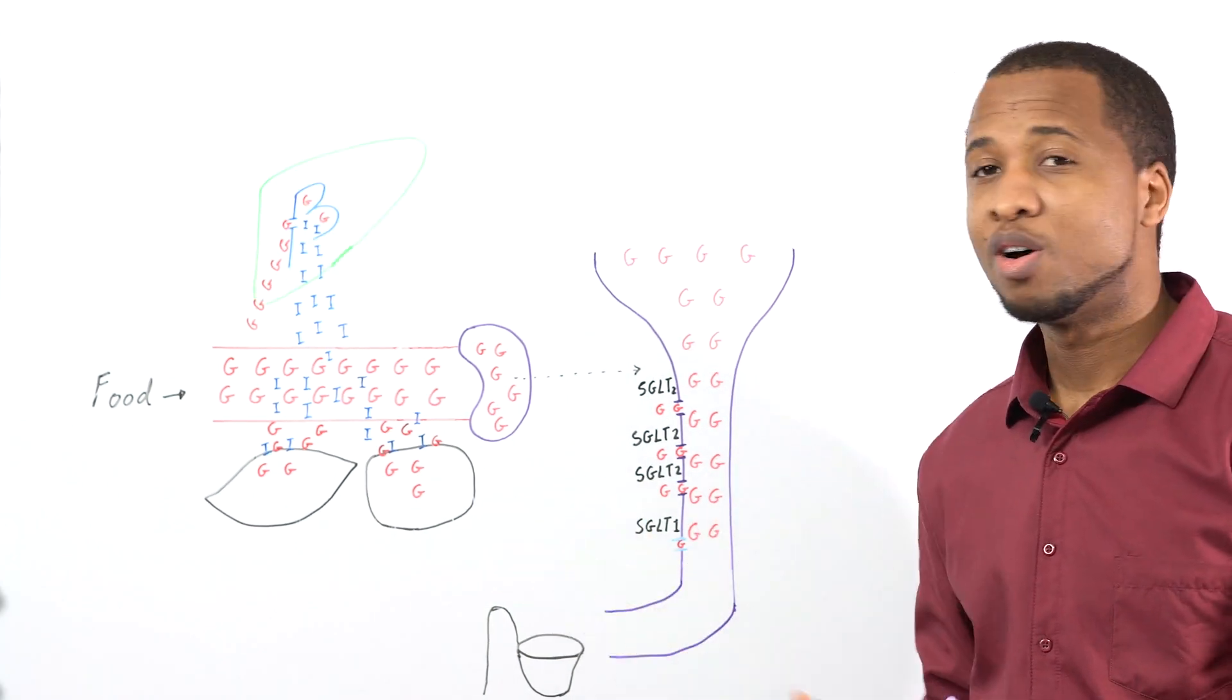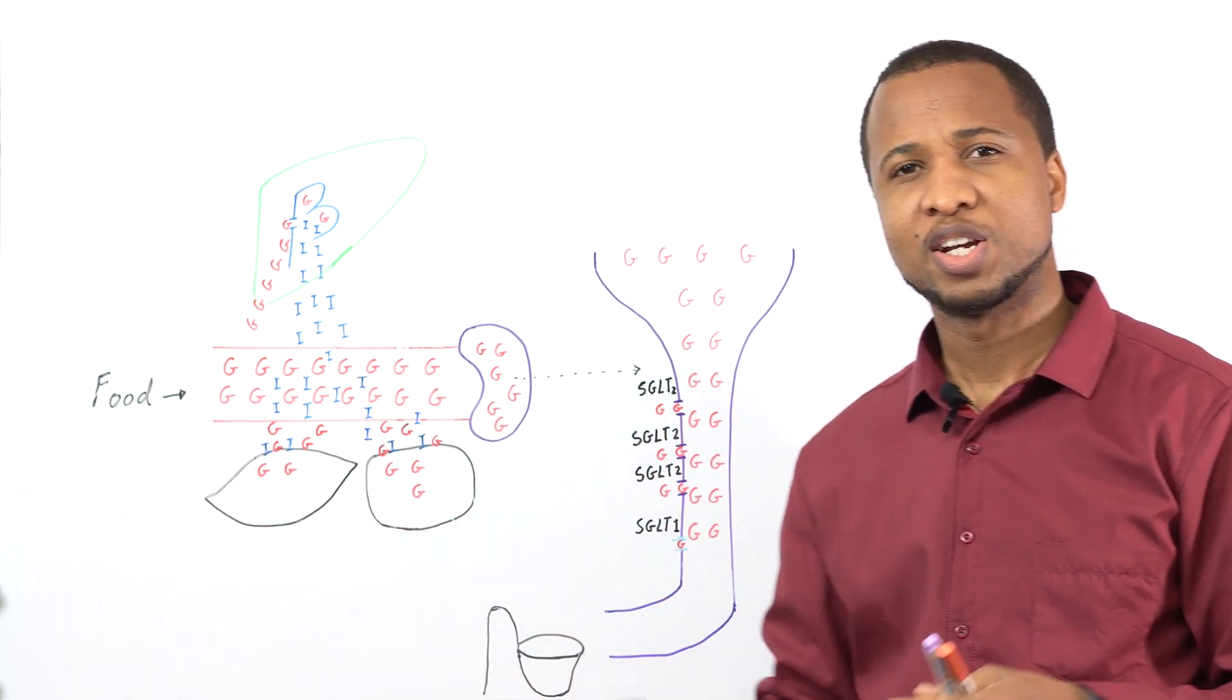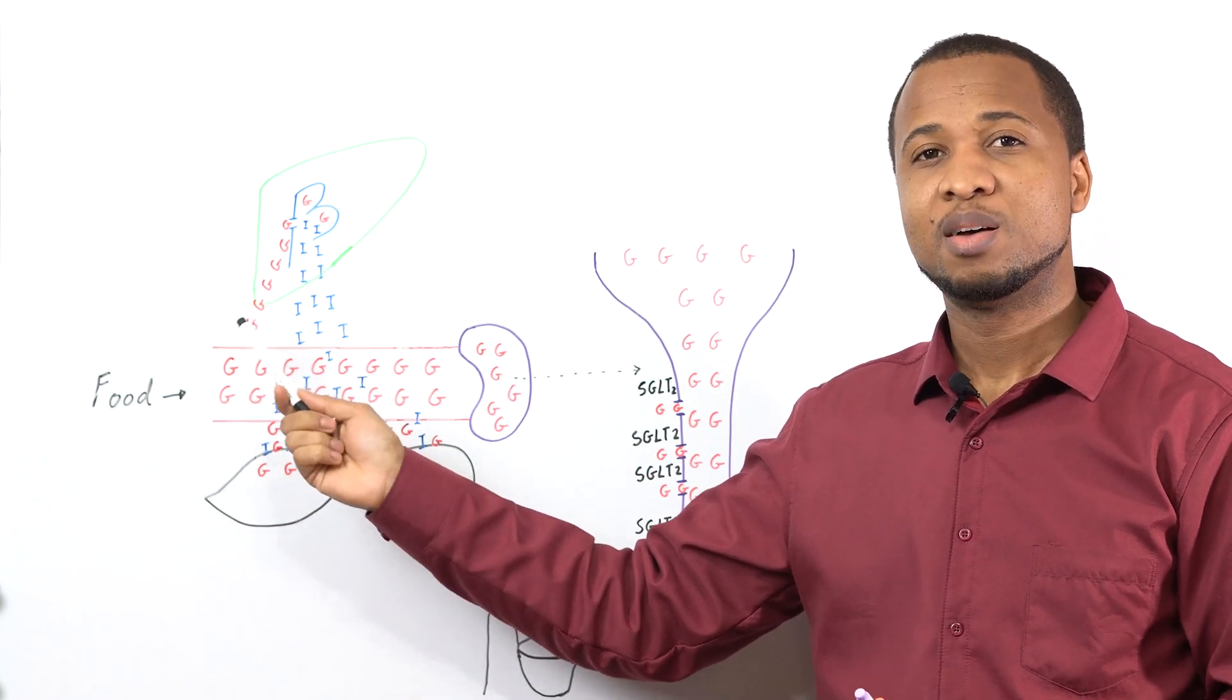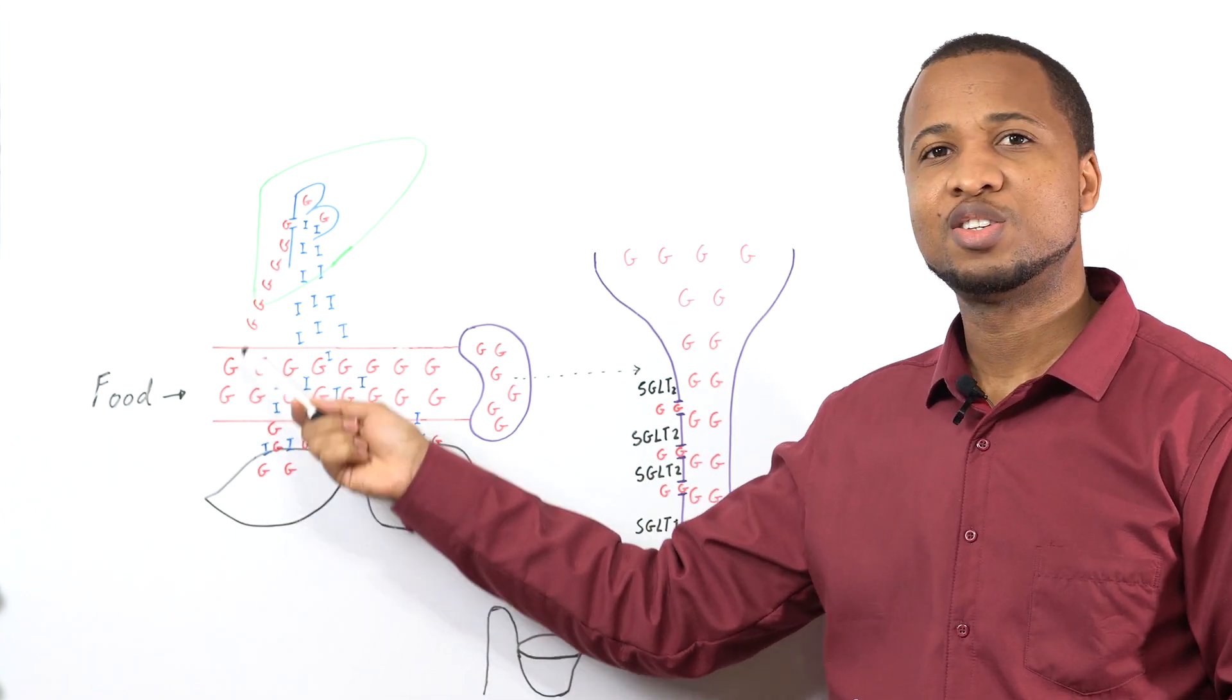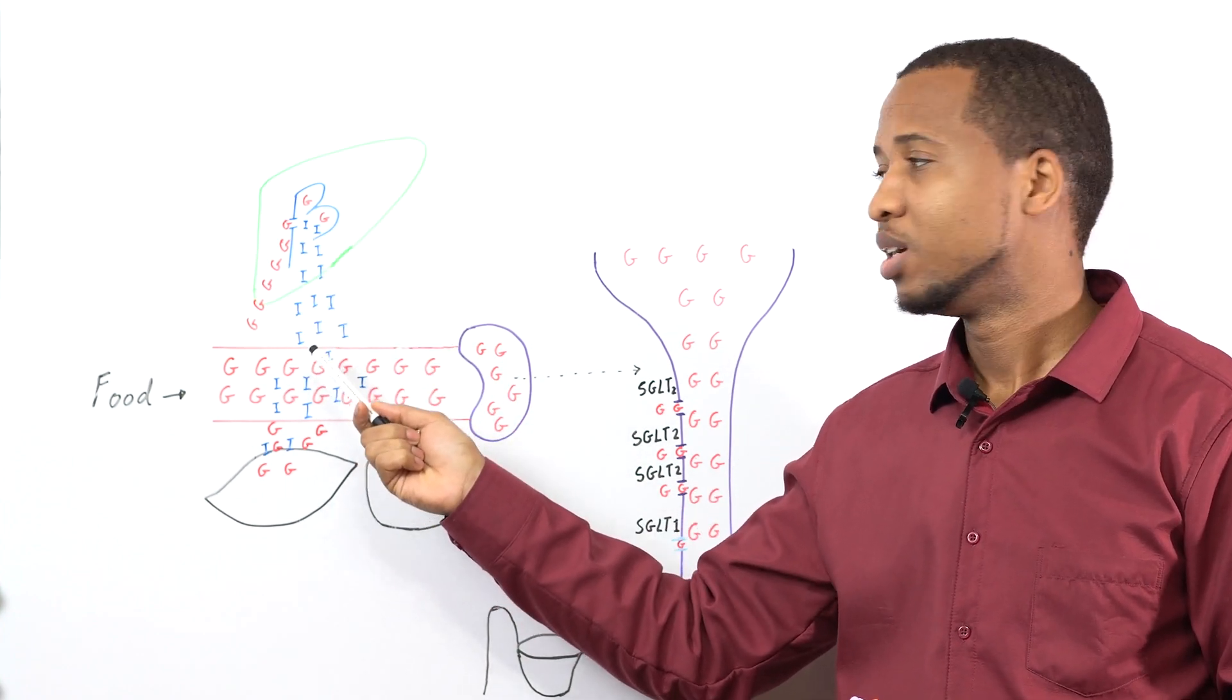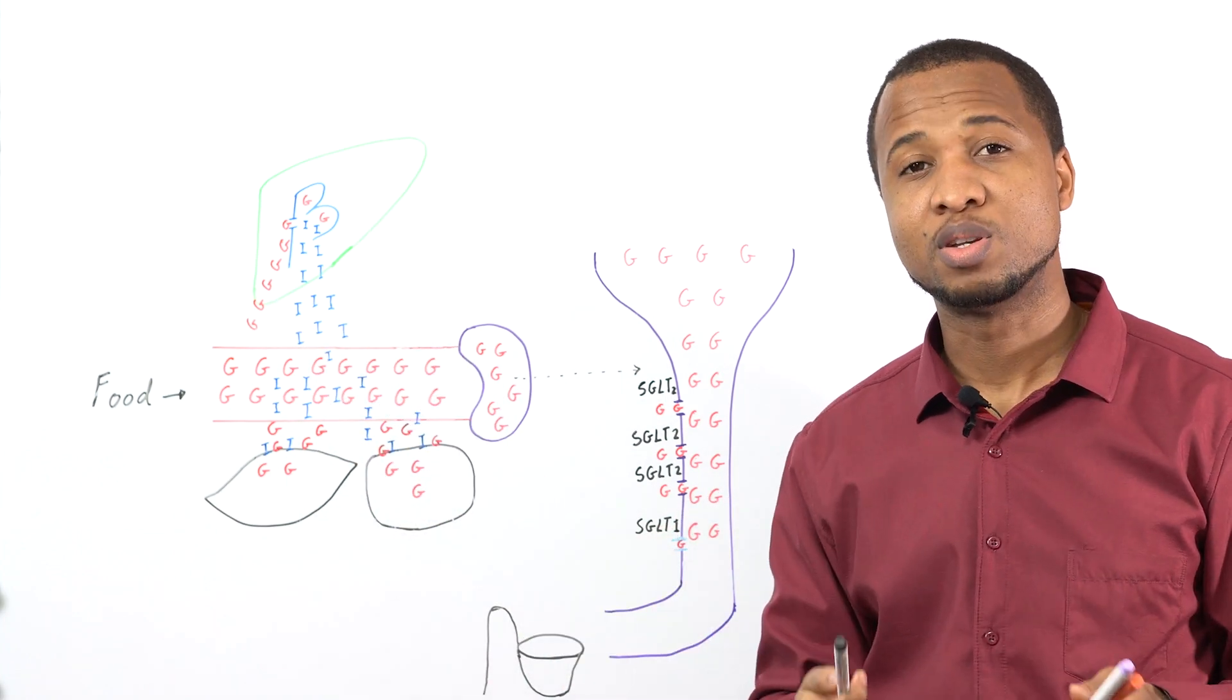Now for some of you that have been following this channel, you already know that when you eat, especially a lot of carbs, your blood glucose goes up and this glucose gets into your beta cells of the pancreas and forces them to release insulin. Now there are other ways to release insulin, but this is the most important one.